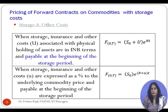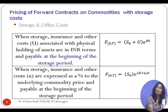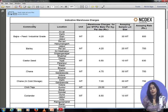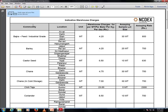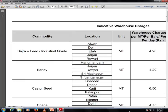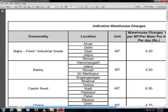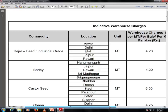In the case of a commodity underlying, we have storage costs associated with storing a particular commodity, besides the cost of buying the commodity. Along with S0, we have to add the present value of the storage cost to find the cost of carry model-based forward or future price. The storage cost is informed to us by exchanges. This is a typical example — the document I have downloaded from the National Commodity Derivative Exchange website.